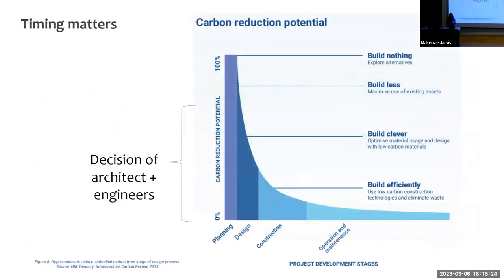The timing matters: those highly effective choices diminish as the project continues. Building nothing is the most effective, but architects and engineers are often not involved in that decision — an owner comes to us after they've decided to build. We're seeing more architects and engineers getting involved in policy, especially urban planning policy. As you get into design, construction, and then O&M, there's less opportunity to reduce carbon.